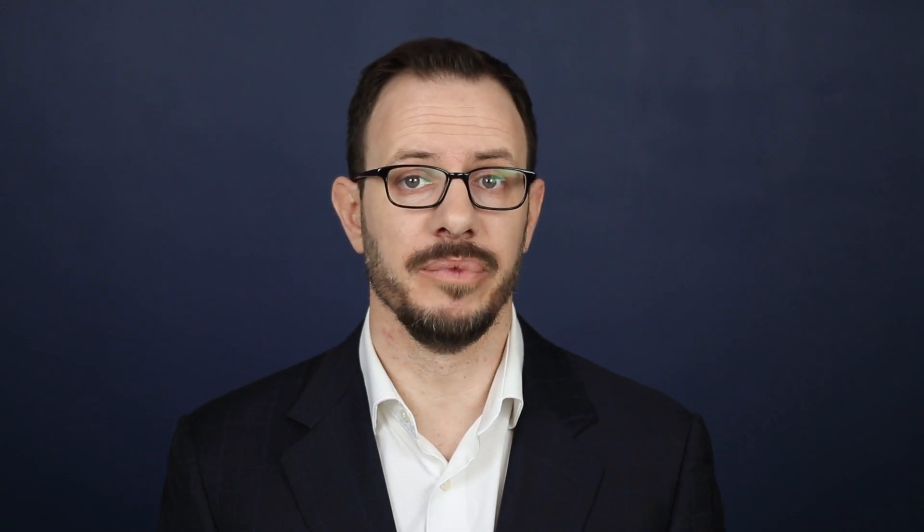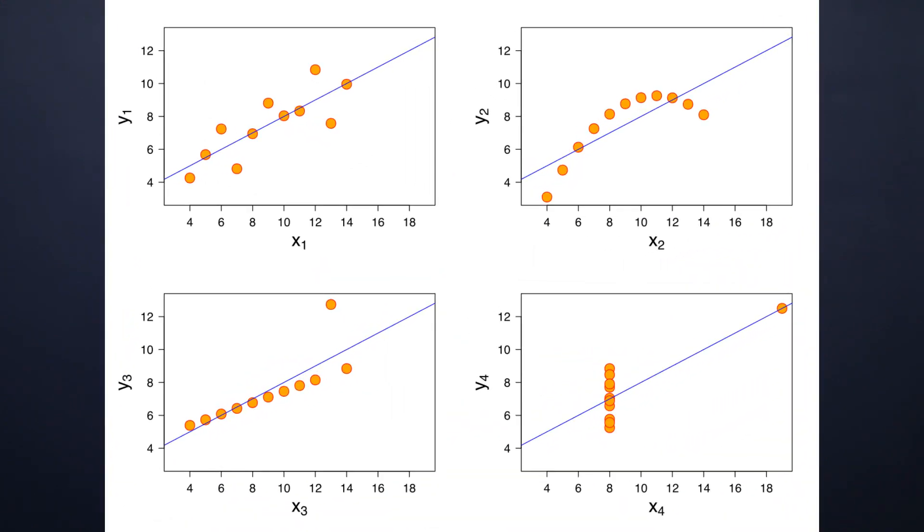The flaw of averages is actually much bigger than just the average or mean — it involves all summary statistics. There's a famous example called Anscombe's Quartet, shown here, which shows four very different plots that have the exact same summary statistics. And Autodesk research took it one step further — several steps further — with the Datasaurus Dozen.